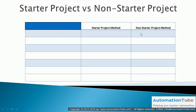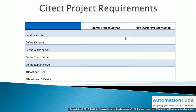We need to identify the minimum requirements for any Cytic SCADA project. As you can see, there are seven items that must be defined for a new project: create a cluster, define an I.O. server, define an alarm server, define a trend server, define a report server, have at least one user, and have at least one I.O. device. If you have not defined all seven of these items, you will get an error when you try and compile the project.